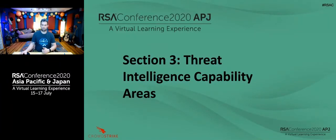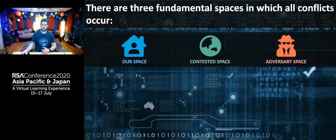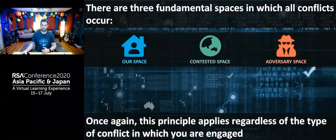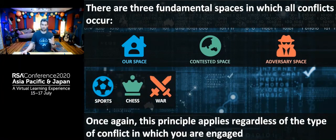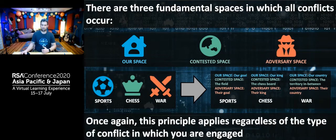Now let's talk about threat intelligence capability areas. At an abstract level, let's think about where conflict occurs. Conflict occurs in one of three spaces: your space, the adversary's space, and everything in between — contested space. In sports, you have your goal, the adversary's goal, and the field as contested space. In chess, your king, the adversary's king, and the board with all the pieces. In war, your country, the adversary's country, and all the territory in between. These principles are universal — no matter the conflict, you'll always see these three spaces.